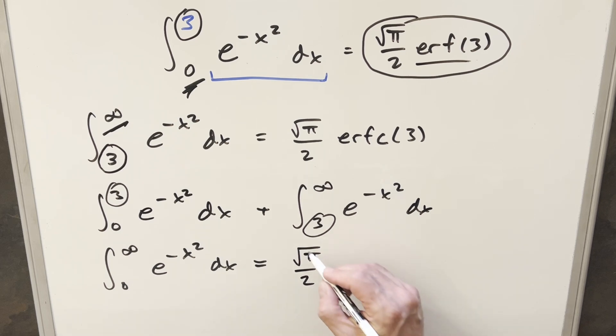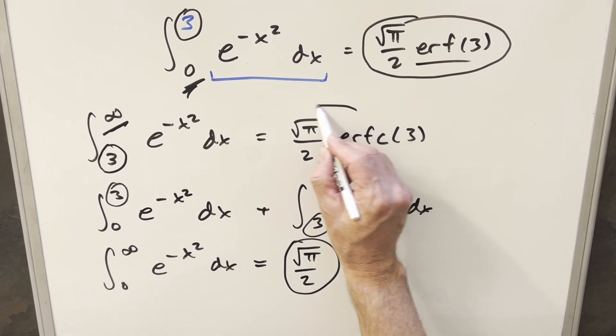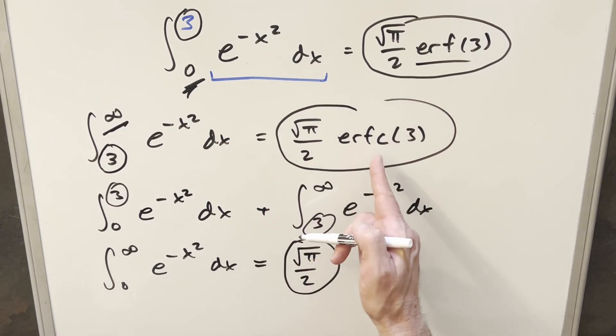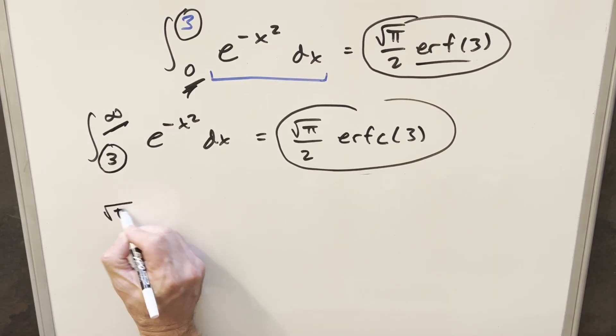And so then using this, if we just actually take these two values, because it's the same thing, we have this is equal to this, this is equal to this, if we add these together, we should come back and end up with square root of pi over 2.